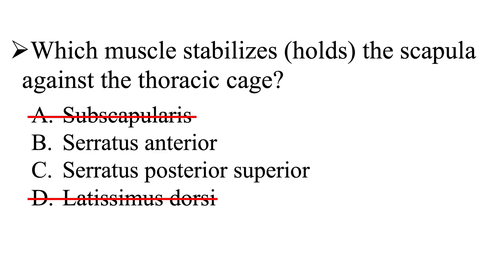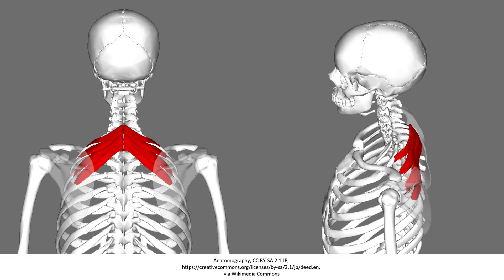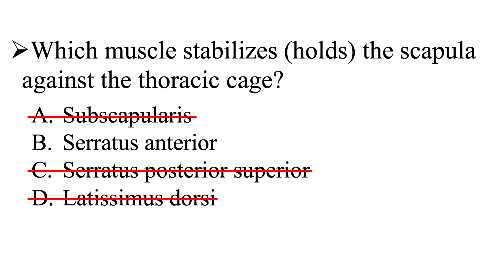Next, we have the serratus posterior superior. This muscle originates at the spinous processes of C7 all the way to T3, and inserts on the surface of ribs 2, 3, 4, and 5. This muscle does not stabilize the scapula against the thoracic cage — it doesn't even attach to the scapula, as you can see here with the scapula shown translucently. So C, the serratus posterior superior, is also not the correct answer.